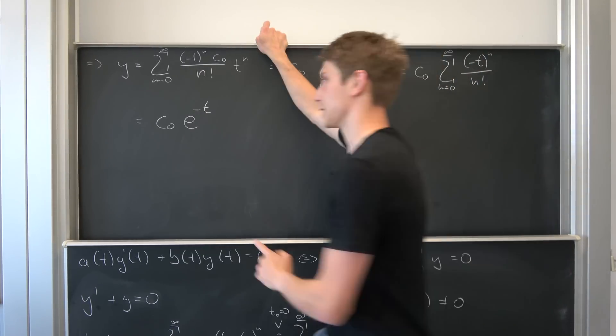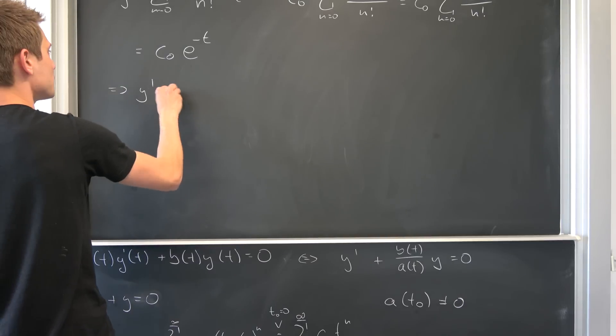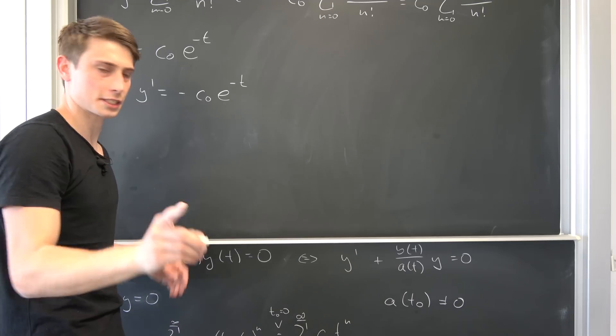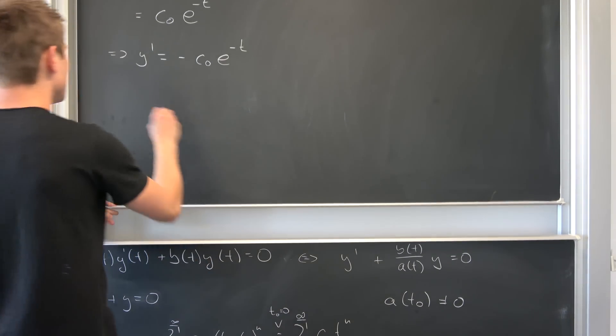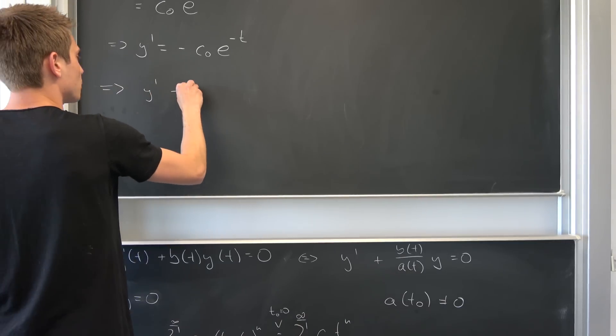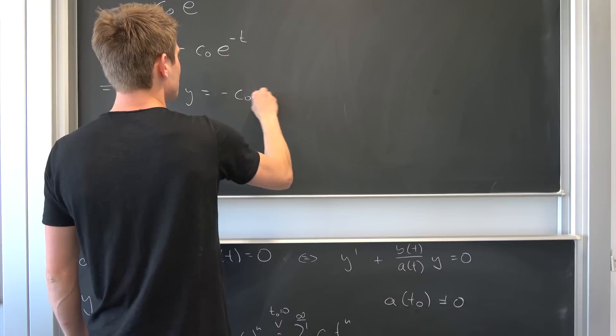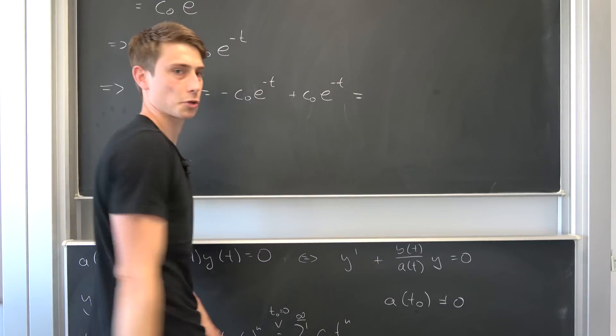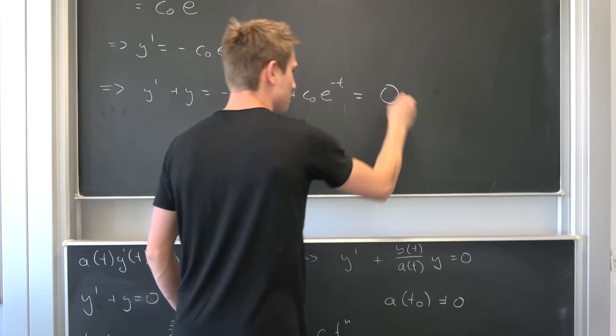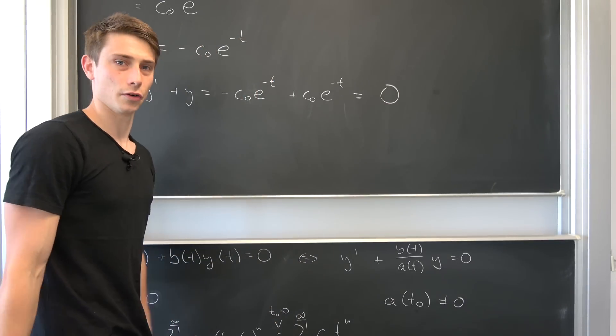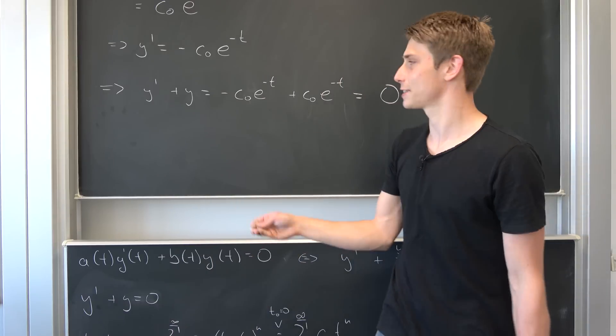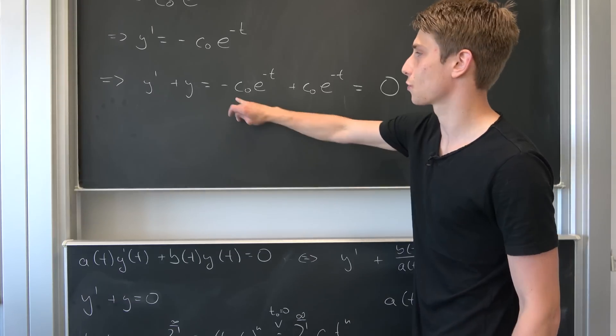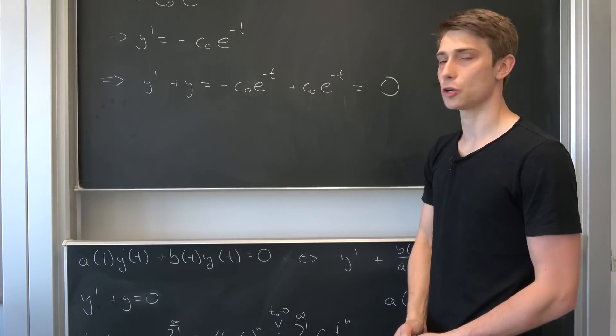What if we differentiate that? That also means y prime is nothing but minus c0 e to the minus t. Let's plug this into our differential equation. That also means y prime plus y is equal to minus c0 e to the minus t plus c0 e to the minus t. But what is that? Those are going to cancel each other out. Zero. It did work. It seriously, seriously did work.